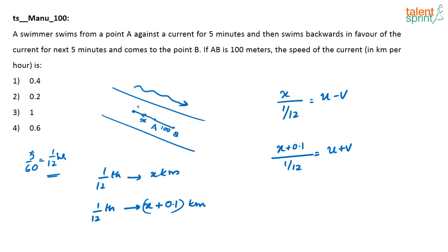So here you will have 12X equals U minus V. And from the second equation, 12X plus 1.2 equals U plus V. So when you subtract these two equations...